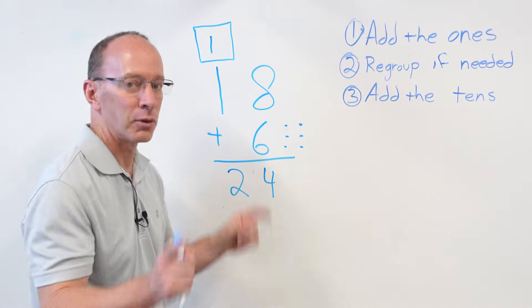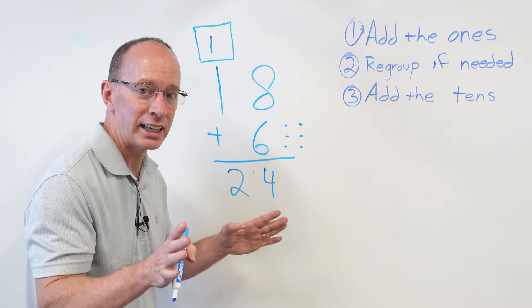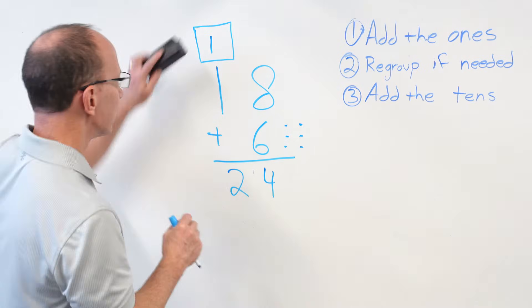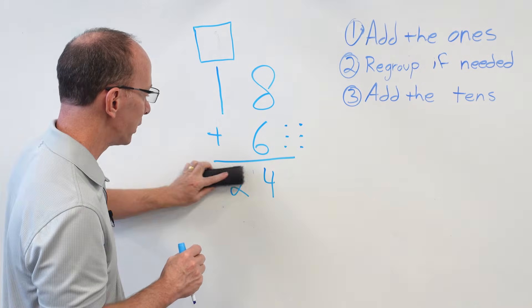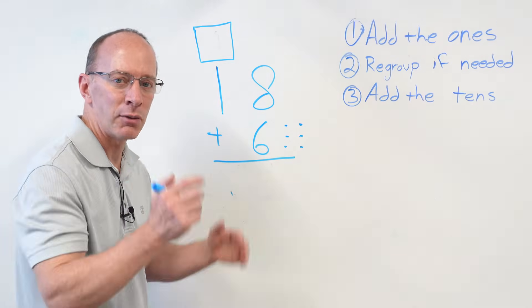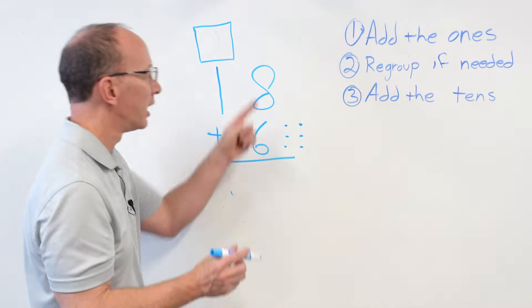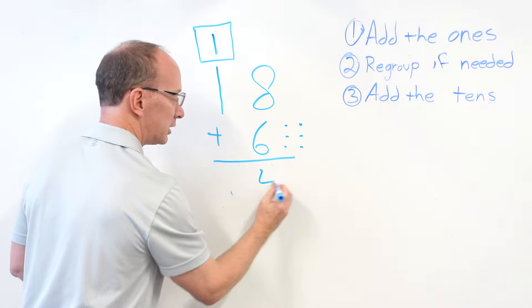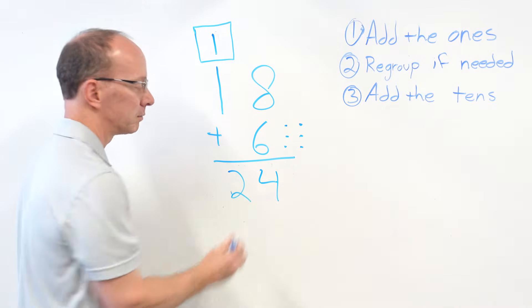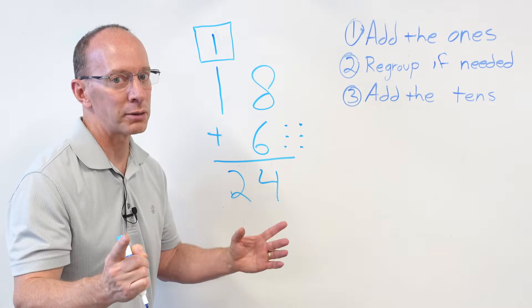Now, before I go to the next problem, what I want you to see is that I'm going to rewrite this a little bit differently. So let's just back up just a little bit here. Once again, 8 plus 6 is 14. I want you to start writing your numbers like this. 8 plus 6 is 14. 1 plus 1 is 2. Let's do another problem.